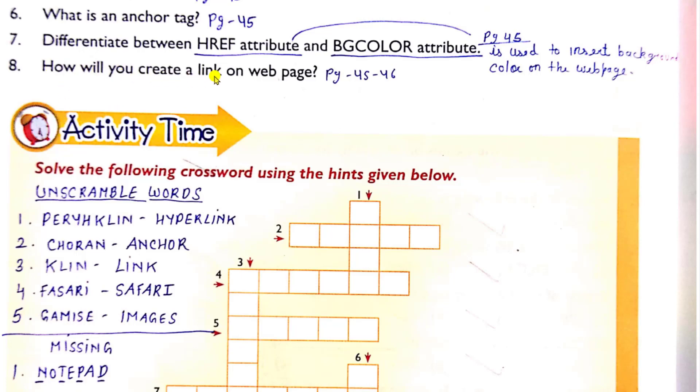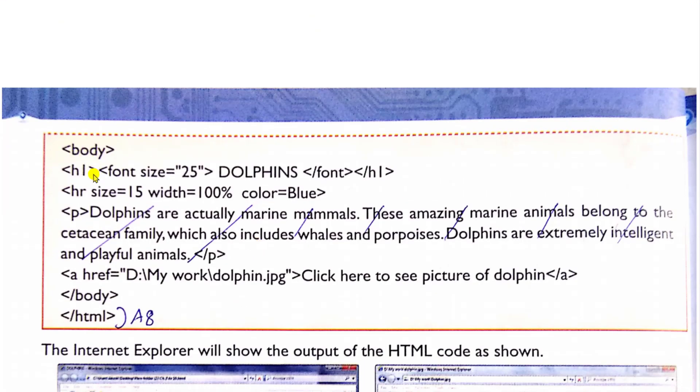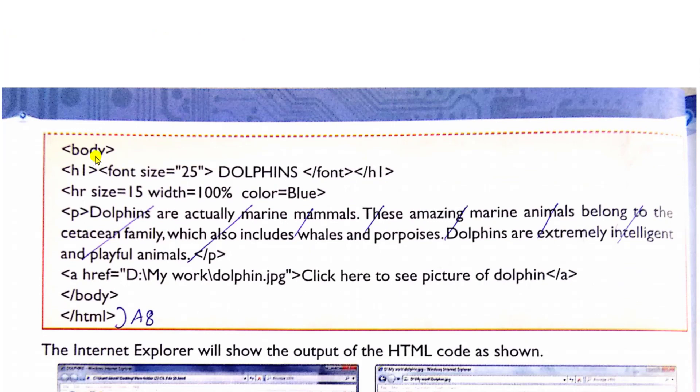Last. How will you create a link on web page? This answer is on page number 45 and 46. So just below this answer seven, to add hyperlinks, type the HTML code given below. Start from here. All four lines from this. Then this one, this one, this one. Don't write these lines. Here you can write dolphins are actually marine mammals till here only. Then type this. This is your complete answer eight. First, you have to write this line. Then start from here till here and continue from this also. You can leave these three lines. Instead of these three lines, just write dolphins are actually marine mammals and then complete it. That's it for this video. Thank you.